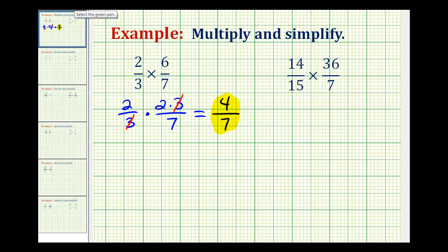Now let's take a look at a second example that's a little bit more involved. So before we multiply the numerators and denominators together, we're going to try to simplify this. So we're going to write each numerator and denominator in prime factored form.